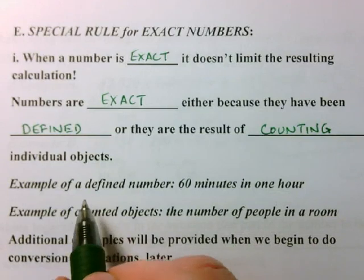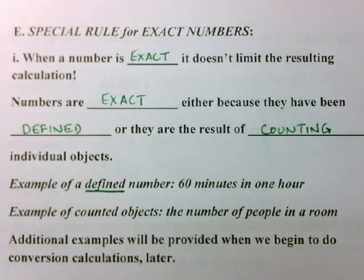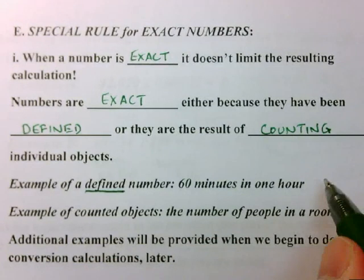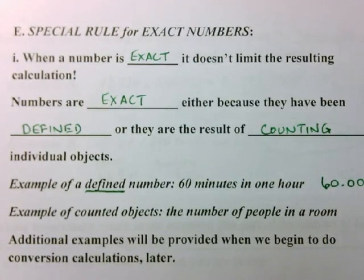However, this is a case where the sixty has been defined as exactly sixty. And I could just as easily have written it with as many zeros as I wanted. So that sixty in sixty minutes per hour does not limit my significant figures for calculations.